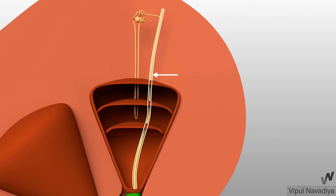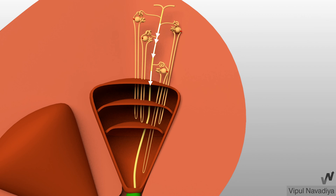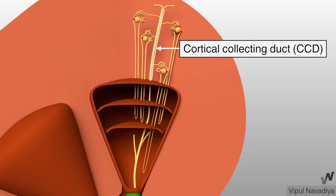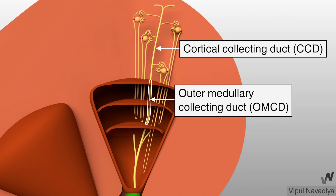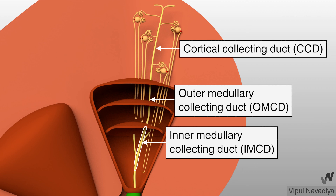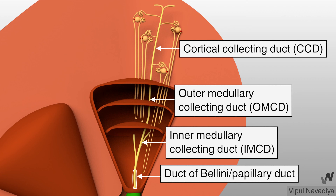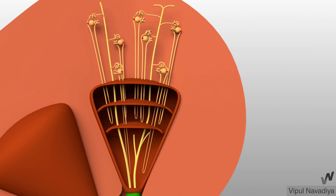Now the collecting duct. Two or more distal tubules join to form a collecting duct, which then descends towards the medulla, collecting urine from further nephrons as it goes deeper. Adjacent collecting ducts unite to form progressively larger collecting ducts. In the cortex it is called the cortical collecting duct; in the outer medulla, the outer medullary collecting duct; and in the inner medulla, the inner medullary collecting duct. Closer to the apex of the pyramid it is called the duct of Bellini or papillary duct, which empties urine into the minor calyx, and of course there are multiple such ducts.